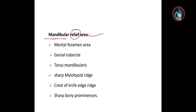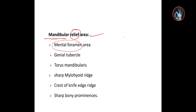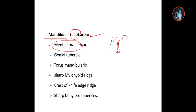We'll start with the mental foramen area, located between the first and second premolar — about one centimeter away. So the mental foramen is located between the two roots of the premolars, approximately one centimeter away.